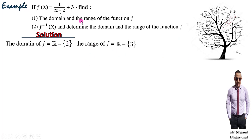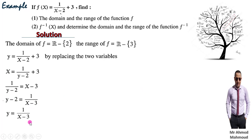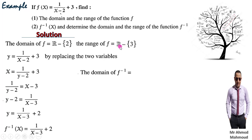Continuing: swapping x and y in f(x) = 1/(x−2)+3 gives x = 1/(y−2)+3. Subtract 3: x−3 = 1/(y−2). Cross multiply: y−2 = 1/(x−3). Add 2: y = 1/(x−3) + 2. So f⁻¹(x) = 1/(x−3) + 2. The domain of f⁻¹ is the range of f = ℝ − {3}, and the range of f⁻¹ is the domain of f = ℝ − {2}.